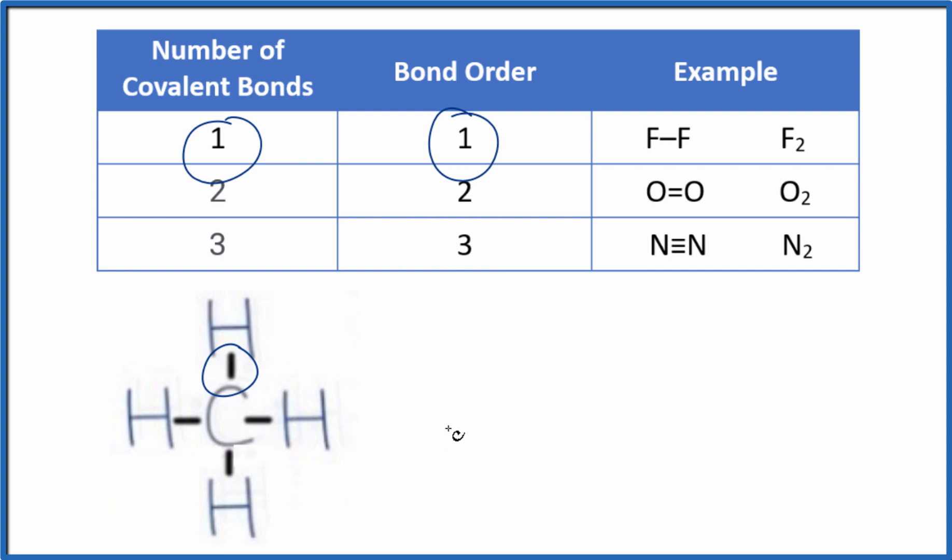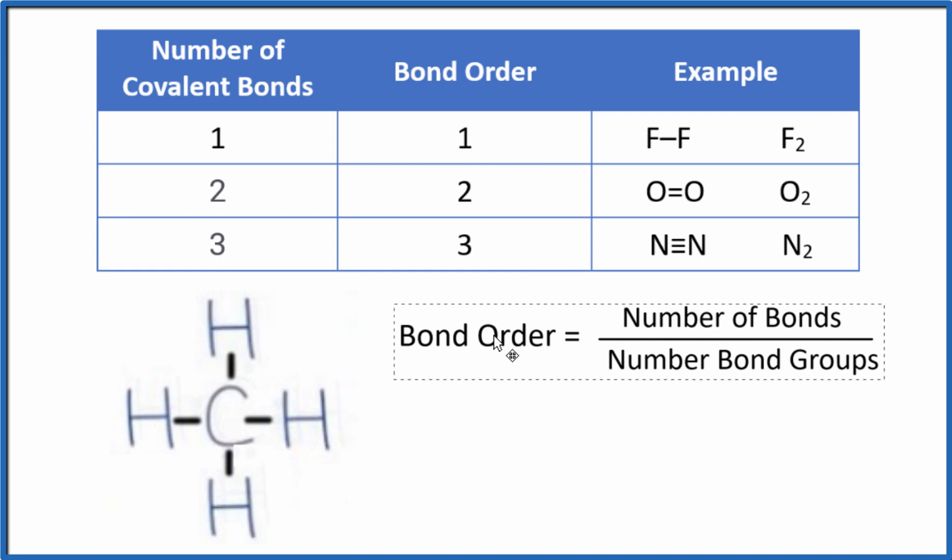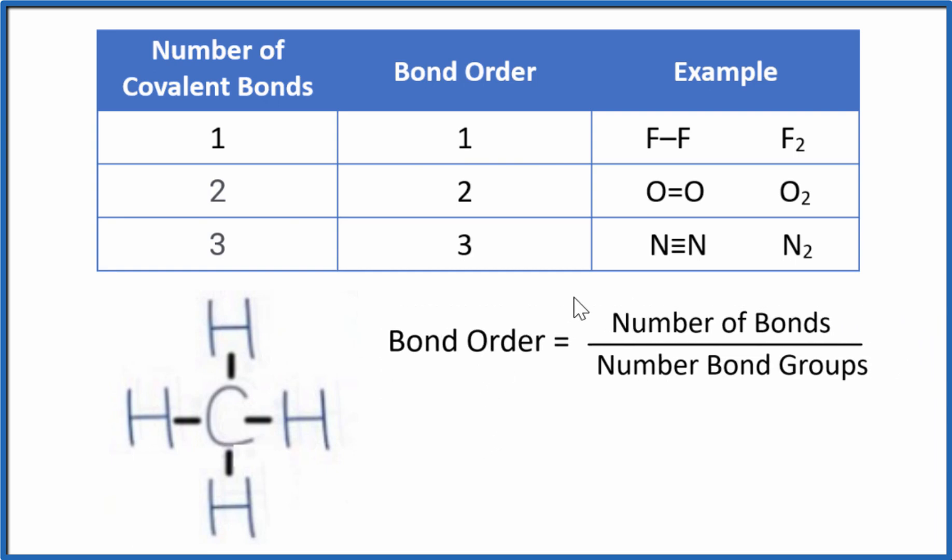If we want to look at the bond order for the entire CH4 molecule here, here's a general formula we could use. The bond order equals the number of bonds divided by the number of bond groups. So essentially, we're just averaging these bonds. Since they're all the same, we're going to end up with an average of one. Let's do that.